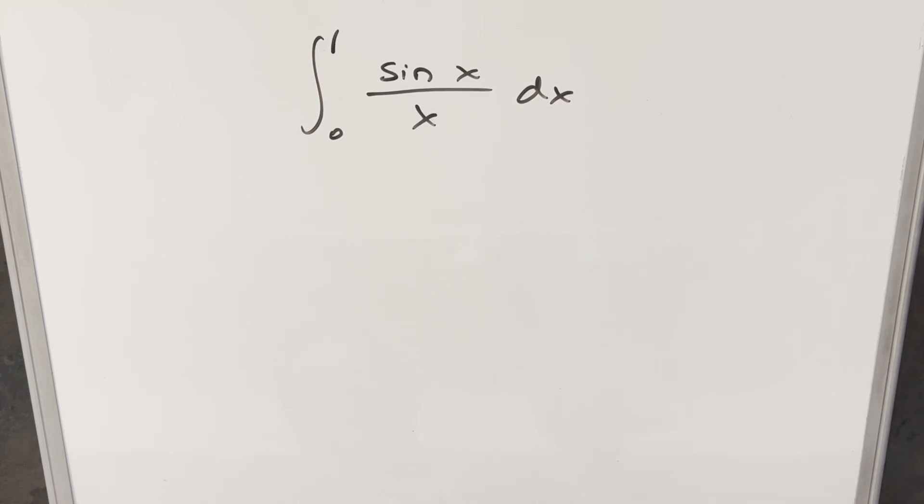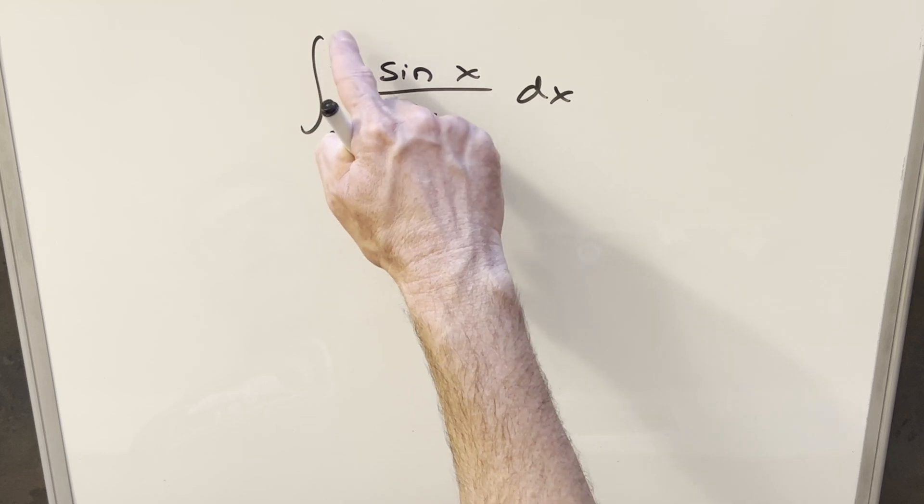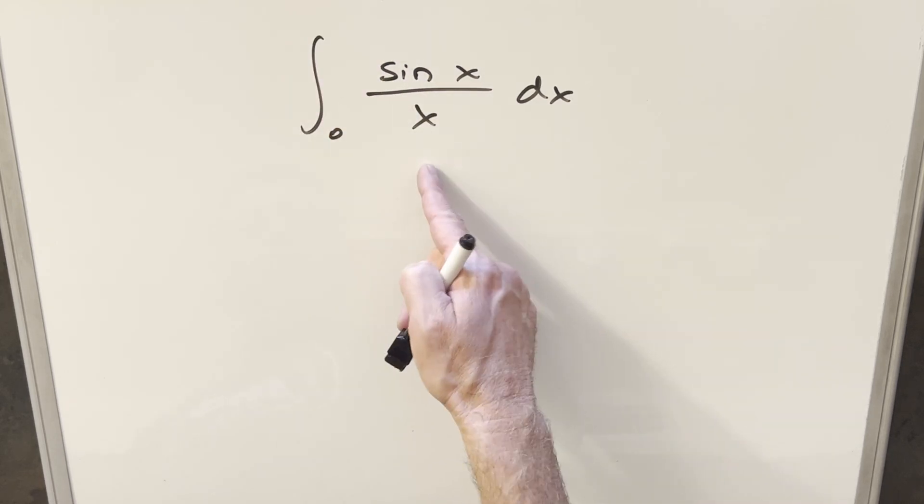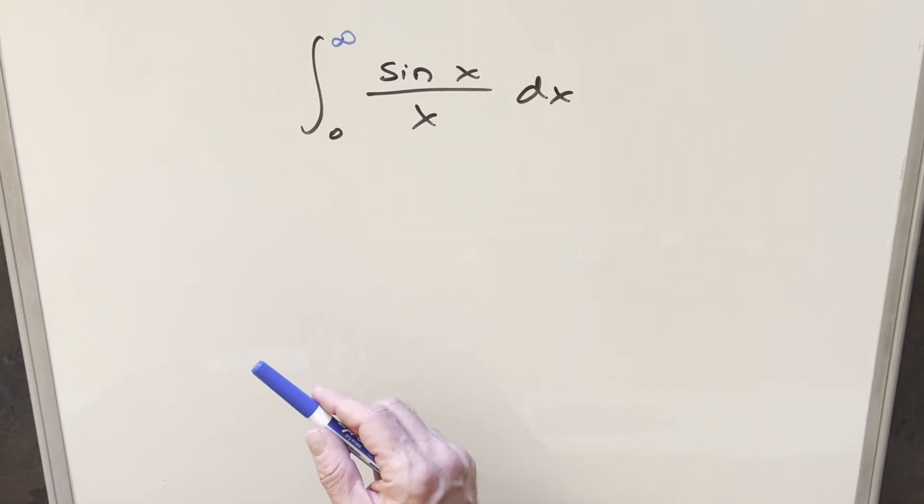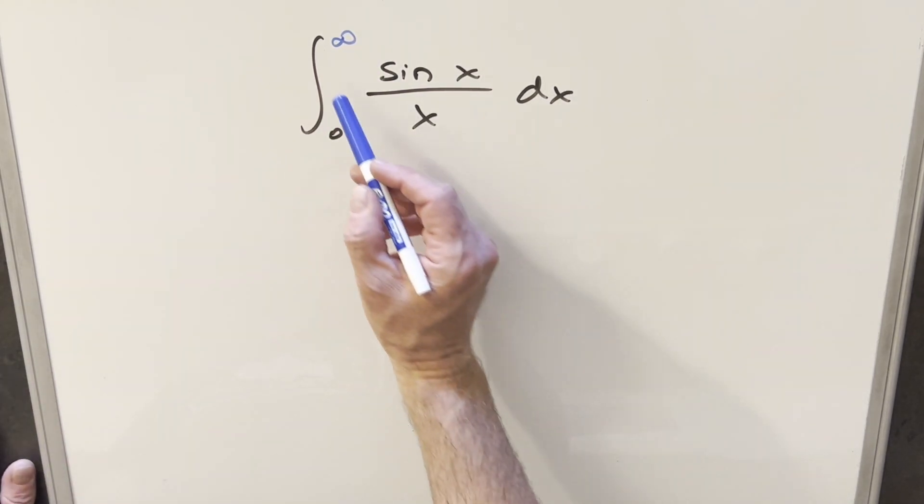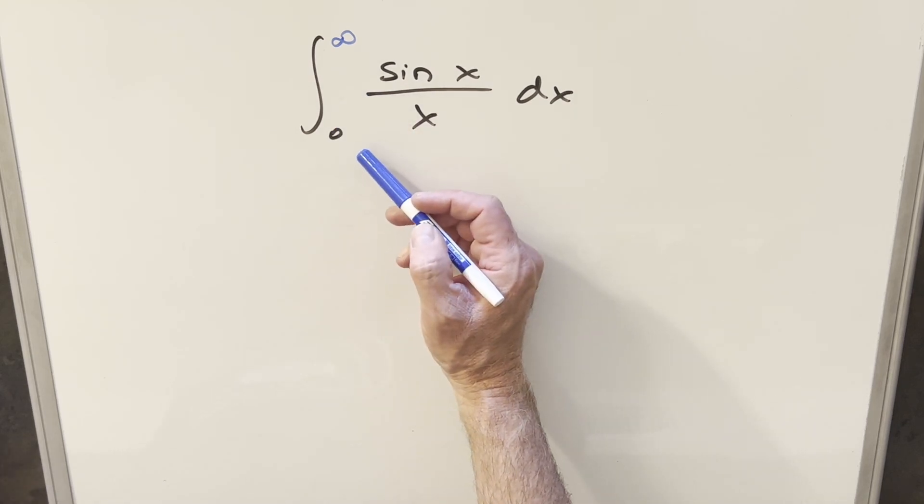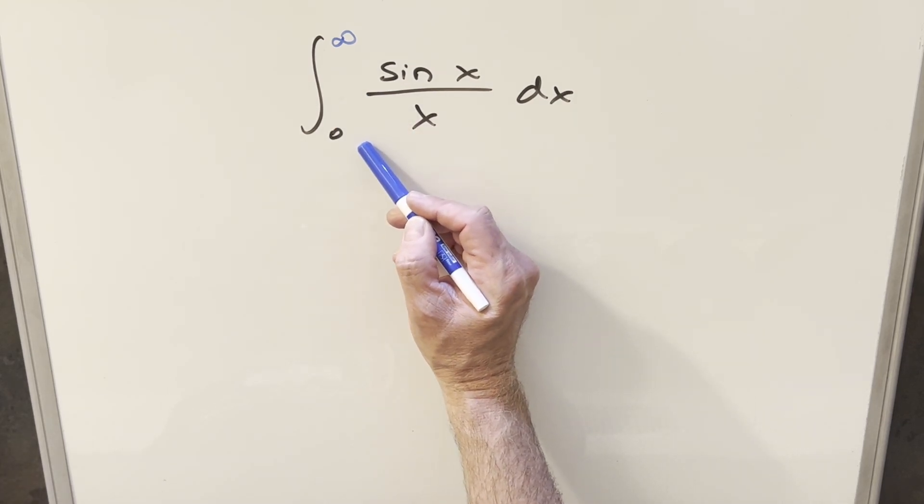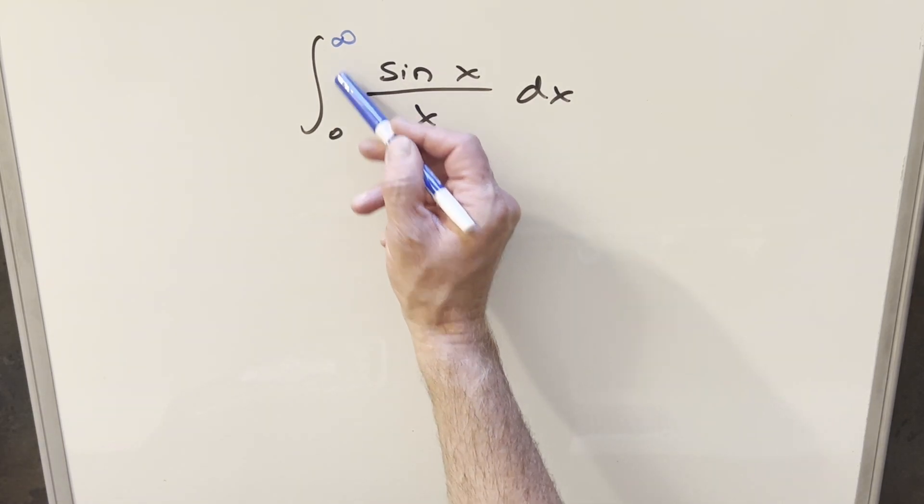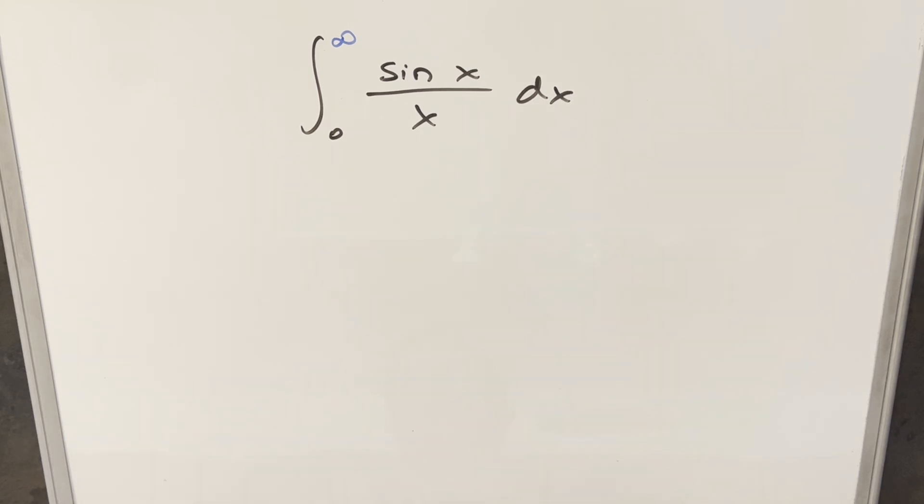And this one's actually pretty similar looking to one I did recently, not too far back. Instead of integrating from 0 to 1, same integrand, we integrated this to infinity. But it turns out this is quite a bit different because in those other videos, since we're going from 0 to infinity, we were set up to use Laplace transforms and Feynman's technique, which worked pretty nicely.